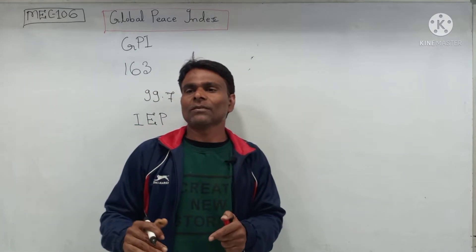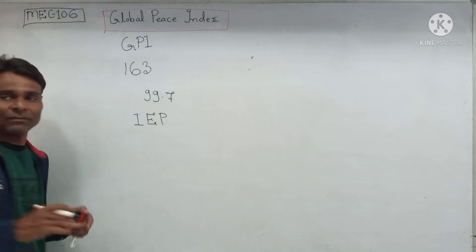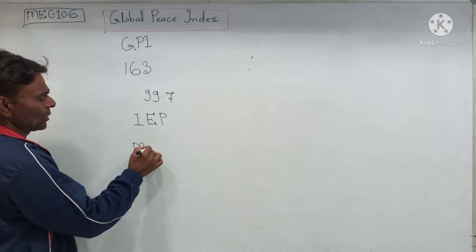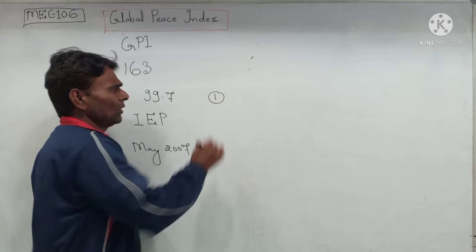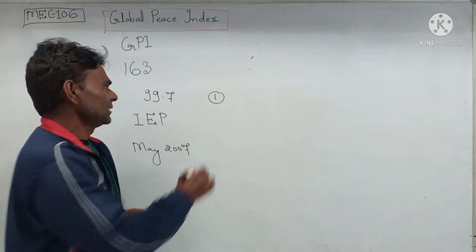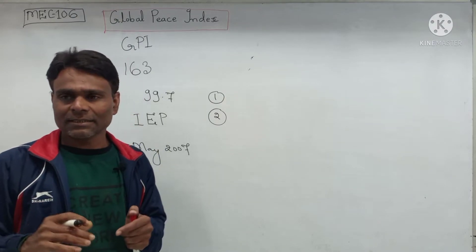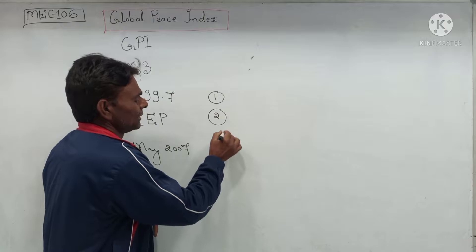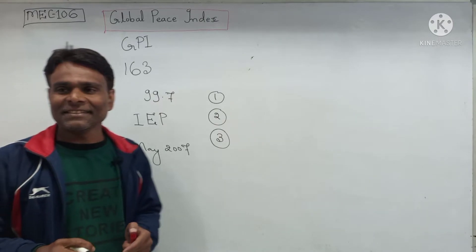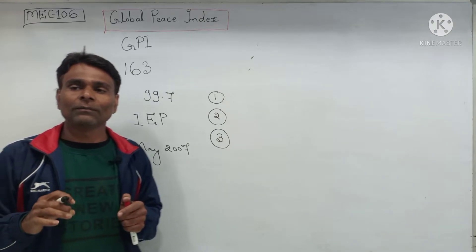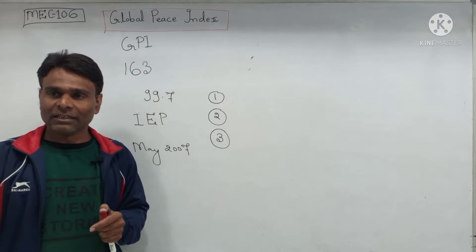Data is collected by the Economics Intelligence Unit. It was first published in May 2007. It is based on three indicators: first, the level of societal safety and security; second, the level of ongoing domestic and international conflict; and third, the degree of military militarization.